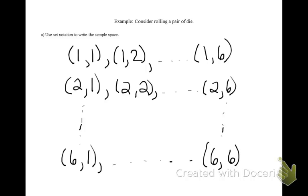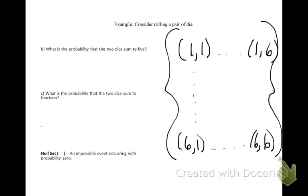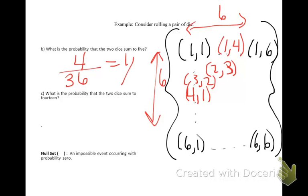This is a matrix format way of representing the sample space. Since it says set notation, we need to put braces on it. What is the probability that 2 dice sum to 5? Let's go through our sample space and locate all the places where you could have a sum of 5. The possibilities are 1 and 4, or 4 and 1 — there are 4 locations where this can happen. This matrix is 6 across and 6 down, a total of 36 observations. So our final probability is 4/36, or a 1 in 9 chance.